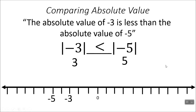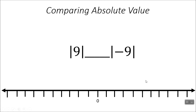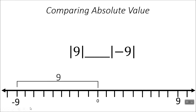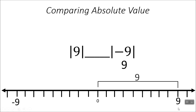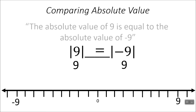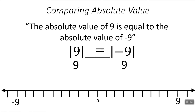Moving on — we have absolute value of 9 and absolute value of negative 9. I'm going to mark 9 and negative 9. Negative 9 is 9 away from 0, and 9 is 9 away from 0. So they're equal. The absolute value of 9 is equal to the absolute value of negative 9.